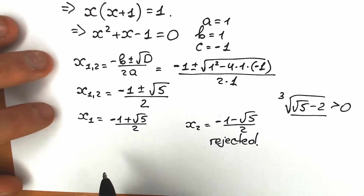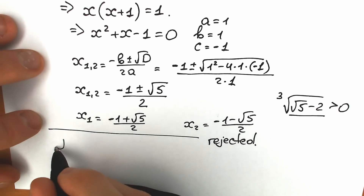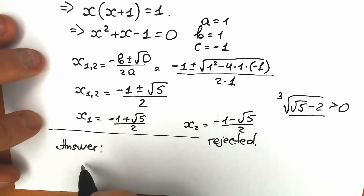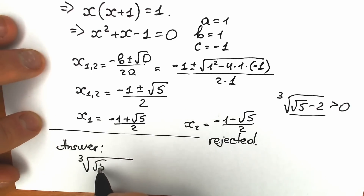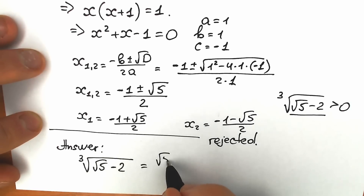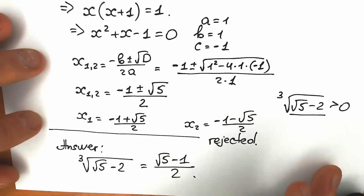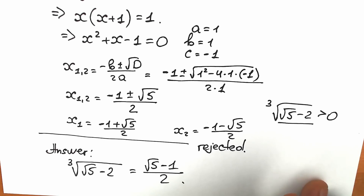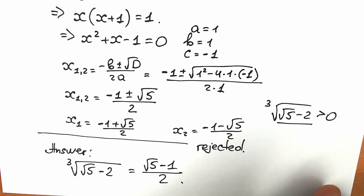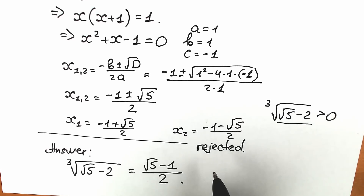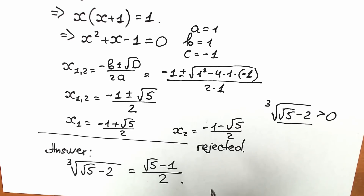So our final answer is: the cube root of the square root of 5 minus 2 equals (√5 − 1)/2. A complicated question with a lot of really interesting and tricky moves. I hope you understand and enjoy it. You can write your own solution and approach in the comment section — it will be really interesting to exchange ideas. Thank you all for watching, for your support, and for your comments. Wish you all the best — love math and have a great day!